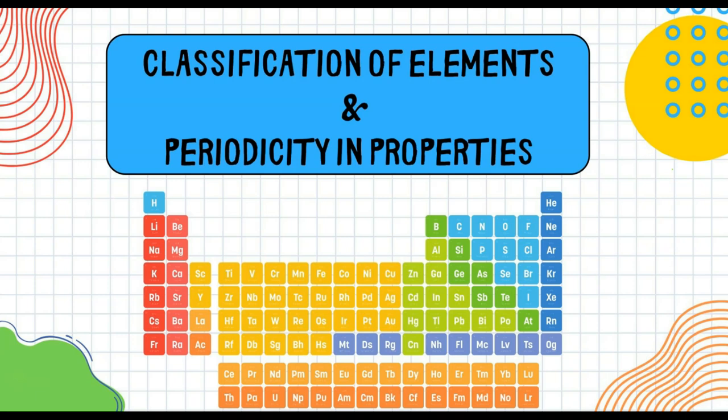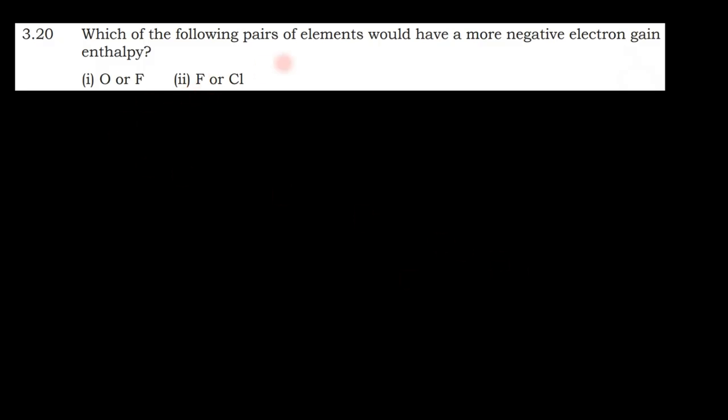Hello everyone. We are discussing the back exercise questions of the chapter 'Classification of Elements and Periodicity in Properties,' and today we will discuss question number 20. The question is: which of the following pairs of elements would have a more negative electron gain enthalpy?